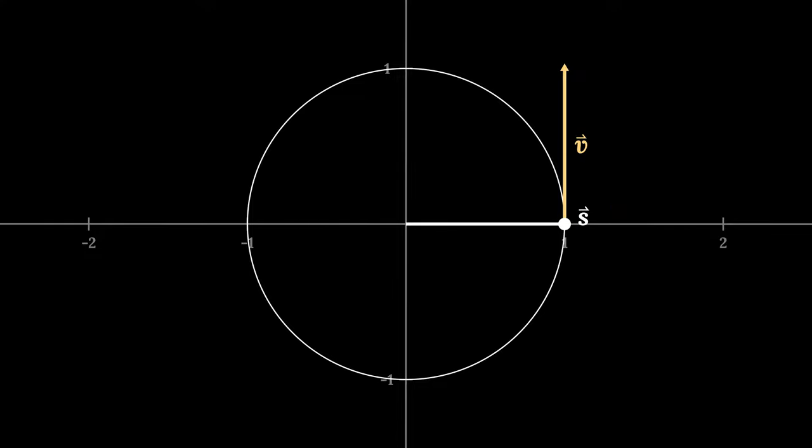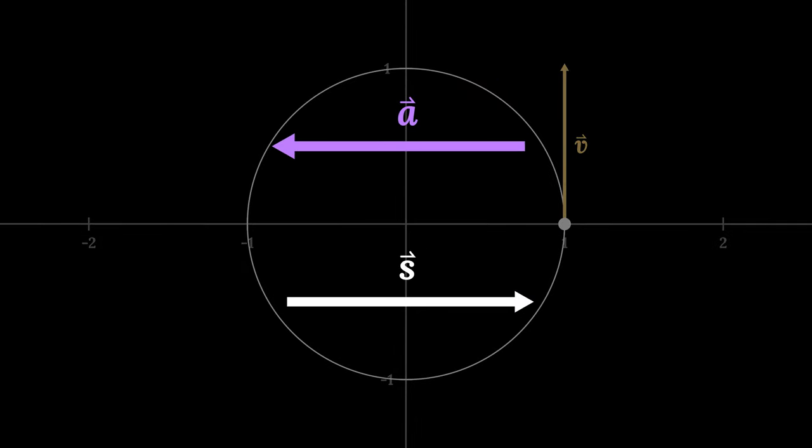This means the velocity is perpendicular to the position, which means it's also rotating. So, the velocity of the velocity, the acceleration, is perpendicular as well. The acceleration vector a points to the center of the circle, in the opposite direction of s. There's the negative we were looking for.